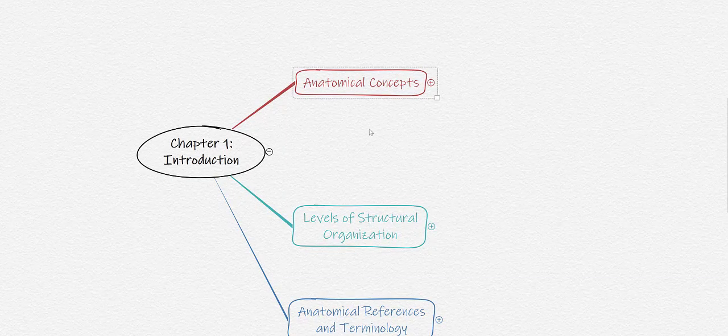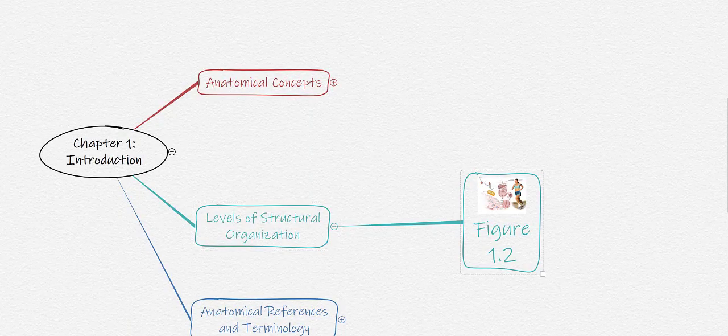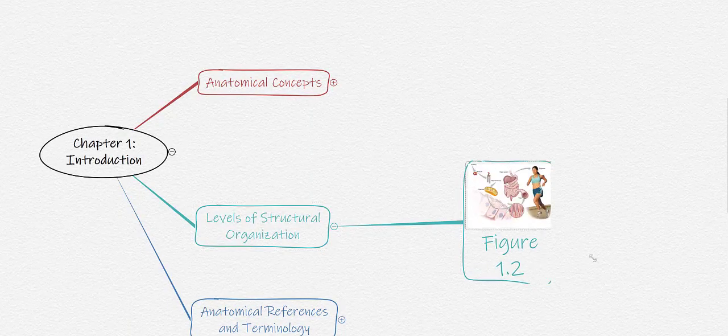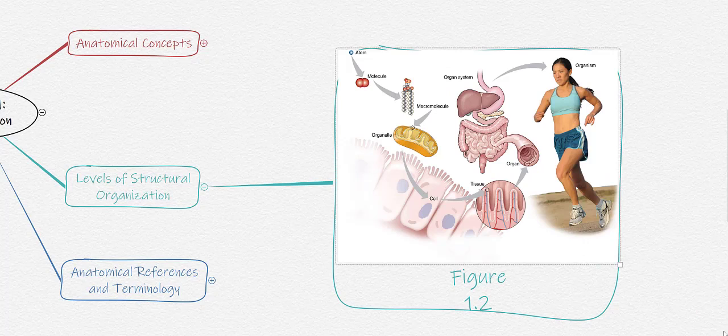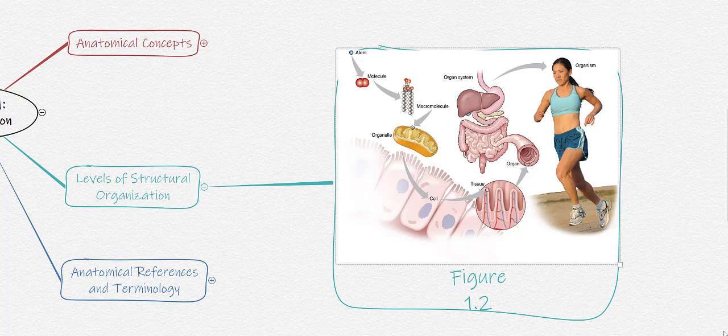The levels of structural organization are encapsulated in Figure 1-2. Let's blow the picture up so we can take a better look at it. We will see that those structural levels include atoms, molecules, cells, tissues, organs, organ systems, and finally, organisms.